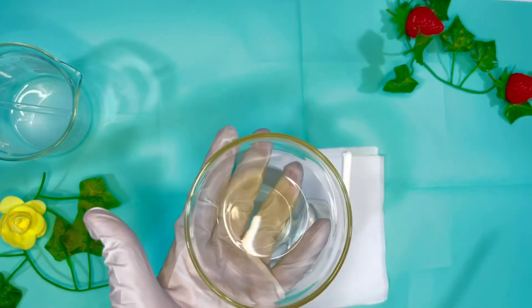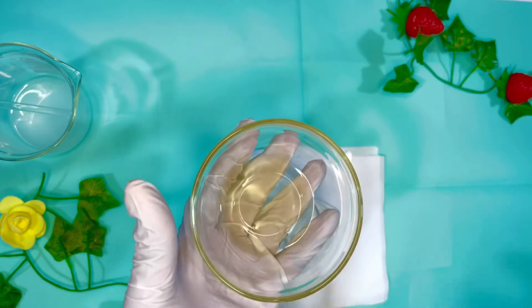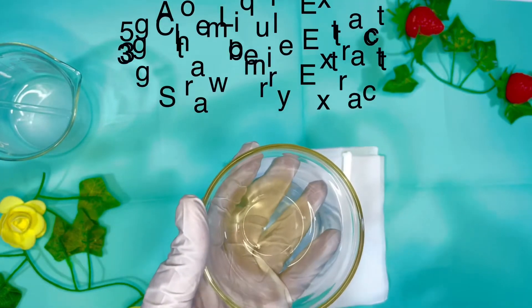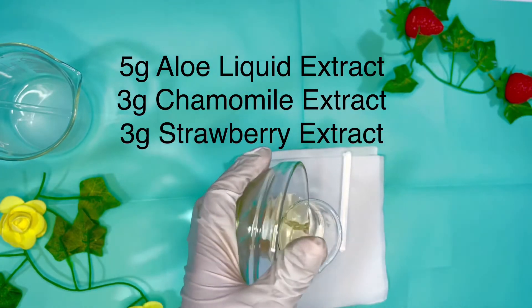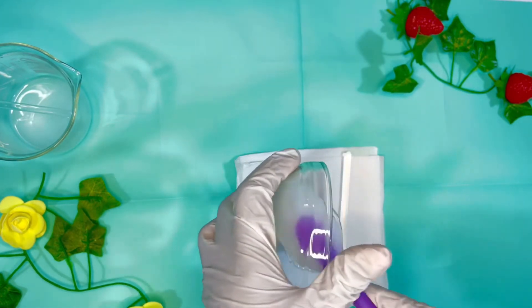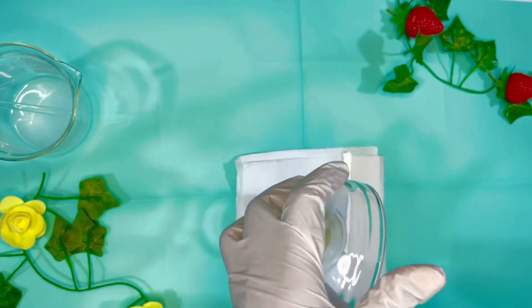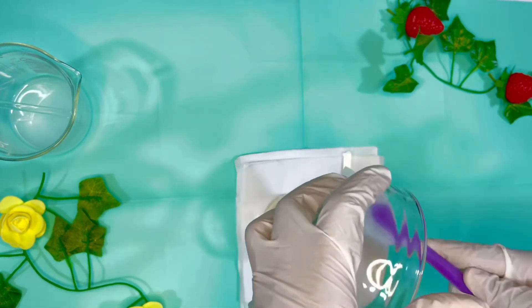So the next ingredient that I'm gonna add are my extracts, which is aloe liquid extract, chamomile extract, and then strawberry extract. And you know strawberry extract does contain high amount of vitamin C, which is an antioxidant and is good for all skin types actually.